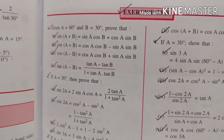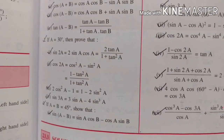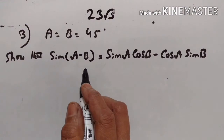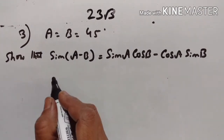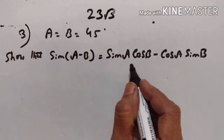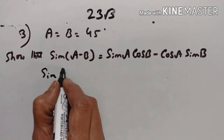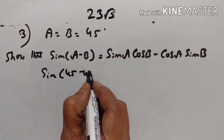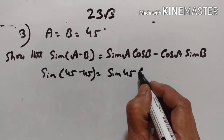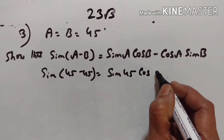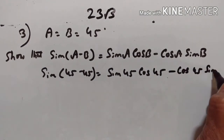Let's continue with Exercise 23B, third problem. A is equal to B is equal to 45. Show that sin of A minus B is equal to sin A cos B minus cos A sin B. Sin of 45 minus 45 equals sin 45 cos 45 minus cos 45 sin 45.